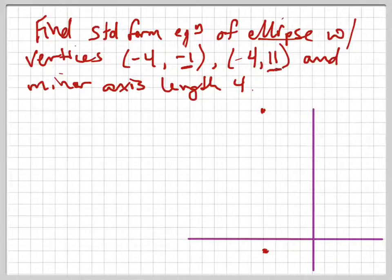so the total distance between these is 12, so go 6 up from the bottom one, which would put me at 1, 2, 3, 4, 5, right there. That's the center, right there.